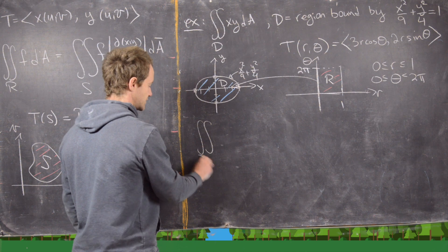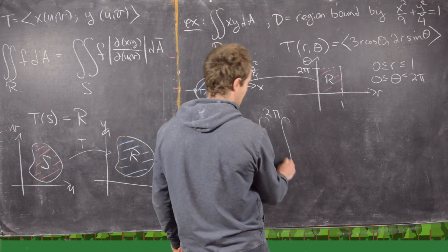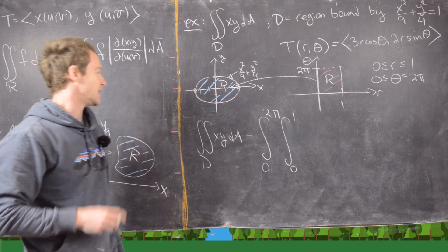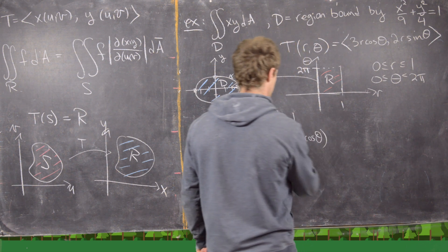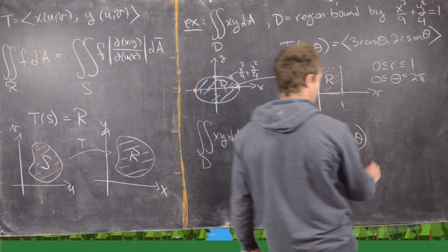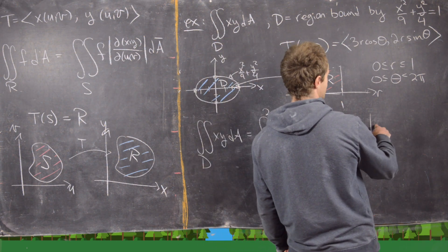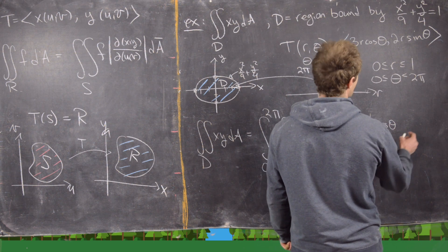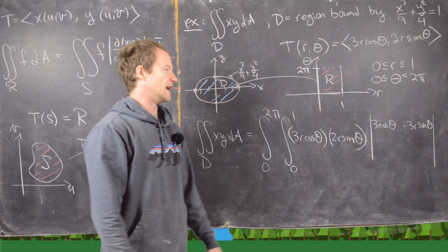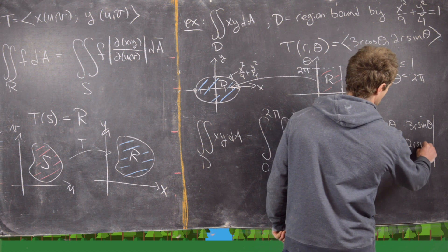Now I can go ahead and calculate my double integral. The double integral over D of xy dA is going to be the integral from 0 to 2π, and then the integral from 0 to 1 — outer integral is theta, inner integral is r. Then we have x, which is 3r cosine theta, and y, which is 2r sine theta. Now I need to find d(xy)/d(r,theta). The top row is the derivative of x with respect to r then theta, giving 3 cosine theta and negative 3r sine theta. The bottom row is the y derivatives: 2 sine theta and 2r cosine theta. Then we have dr dθ.